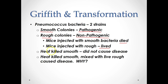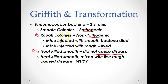He subjected the pathogenic smooth strain to high levels of heat to kill all the bacteria cells. When you kill the bacteria cells and inject them into a mouse, they did not cause disease. In the fourth trial, he mixed the heat-killed smooth with the rough colonies. Notice that individually neither caused disease, but when he mixed those two together, it caused disease and the mice died.